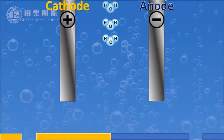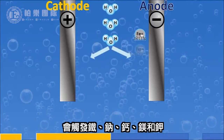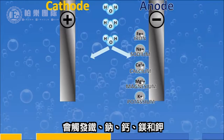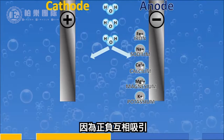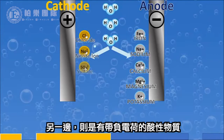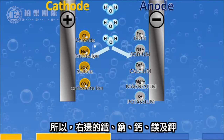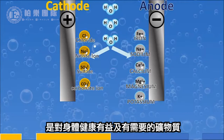The H2O — what happens is it triggers the iron, sodium, calcium, magnesium, and potassium. These are your positive minerals that go directly to the minus, because positives and minuses attract each other. On the other side we have the negatively charged, acidic minerals.